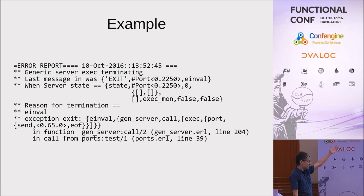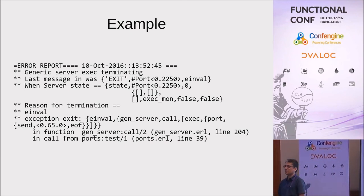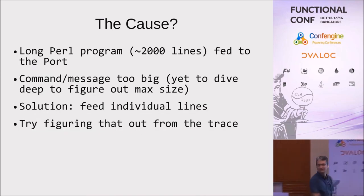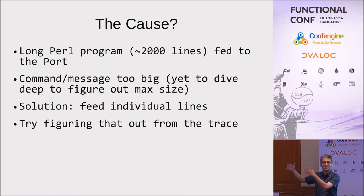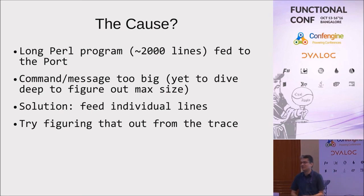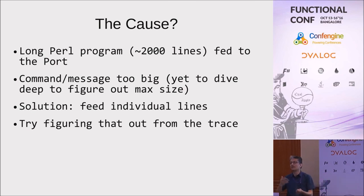Erlang stack traces drive me crazy. I got a stack trace where the reason for termination was e-inval, and I couldn't figure out what was going on. What had happened was that a long Perl program — the entire program written as one big blob into the port — buffered. But the stack trace didn't tell me why. I had to chop the file in two, then in three, until it clicked that this was too big, being sent over TCP to the internal port program, which is why it was buffering. But that was not evident from the stack trace — it just said e-inval. The solution is to break it up into lines and feed individual lines, which works, but I would like better error messages.